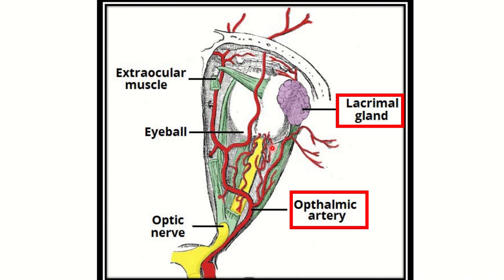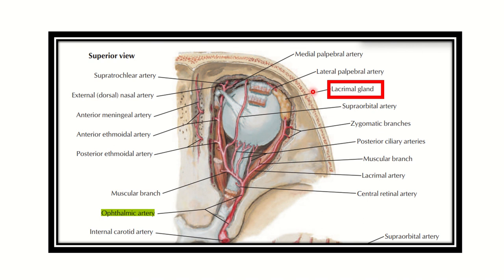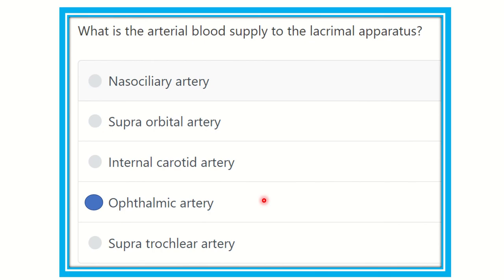The ophthalmic artery reaches the orbital cavity and supplies all the contents within it, including the lacrimal apparatus. In this picture, another view of the lacrimal gland confirms it is supplied by branches of the ophthalmic artery. So our answer is the ophthalmic artery, which supplies the lacrimal apparatus and other contents within the orbital cavity.